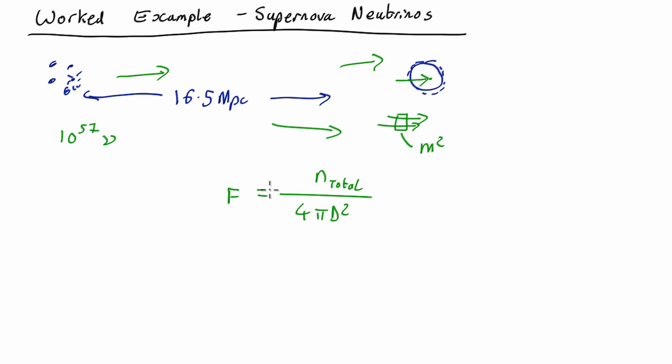Now, a megaparsec is a million parsecs. A parsec is 3.09 × 10¹⁶ metres. So d is about 5.1 × 10²³ metres.